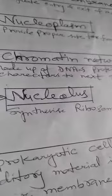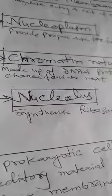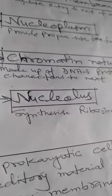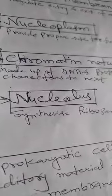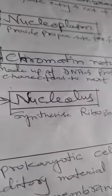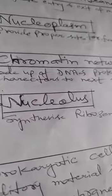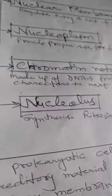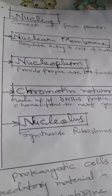The fourth part is the nucleolus. Nucleolus is a dense structure inside the nucleus that synthesizes ribosomes. The nucleus of eukaryotic cells is well-developed. In prokaryotic cells, there are hereditary materials without encircling by nuclear membrane. That structure is called nucleoid.